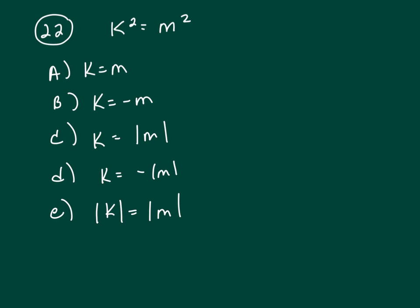We know that k squared equals m squared, so we know this is true. And we're trying to figure out which of the following must be true. So this is going to be about negatives and positives.